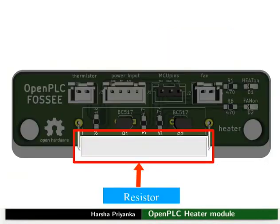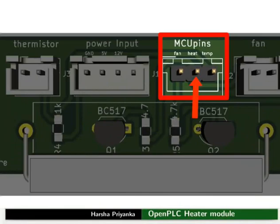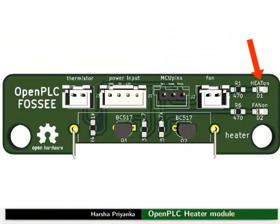In this module, we are using a resistor as the heating element. While conducting current, it gets heated up due to power loss from it. This resistor conducts only when the pin heat is given logic 1. This will be indicated by the LED heat on, present to the right on the PCB.